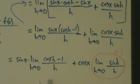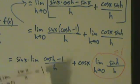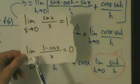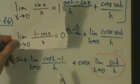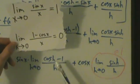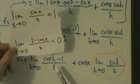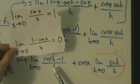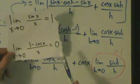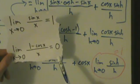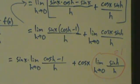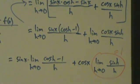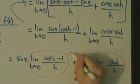How about the other one? The limit as h goes to 0 of cosine h minus 1, all divided by h. That looks like our second special trig limit: the limit as x goes to 0 of 1 minus cosine x over x. Instead of 1 minus cosine h it's cosine h minus 1, but all that does is multiply by negative 1, and the limit is 0, so multiplying 0 by negative 1 still gives 0.